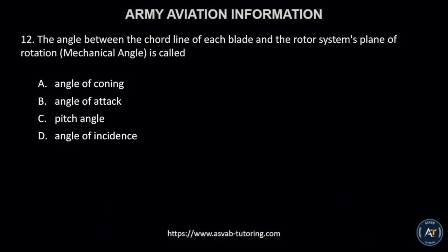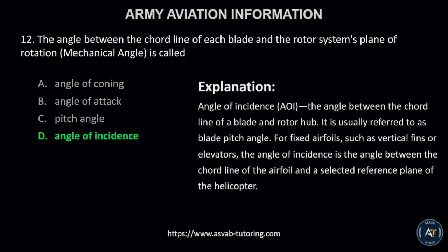Number 12. The angle between the cord line of each blade and the rotor system's plane of rotation — the mechanical angle — is called A, angle of coning; B, angle of attack; C, pitch angle; or D, angle of incidence? The correct answer is letter D, angle of incidence. The angle of incidence, or AOI, is the angle between the cord line of a blade and the rotor hub, usually referred to as blade pitch angle. For fixed airfoils such as vertical fins or elevators, the angle of incidence is the angle between the cord line of the airfoil and a selected reference plane of the helicopter.